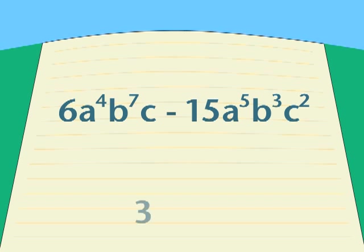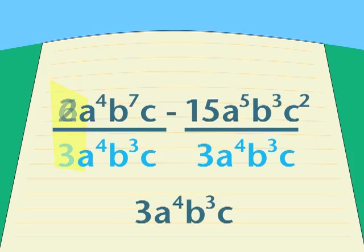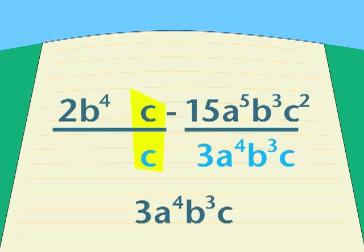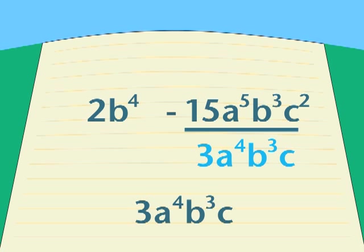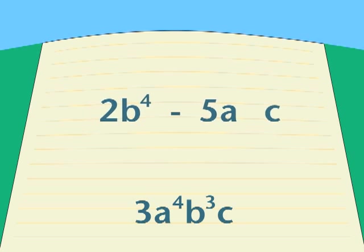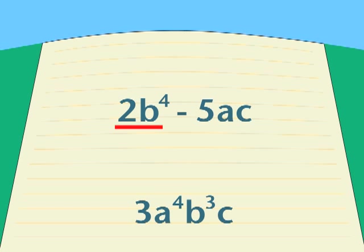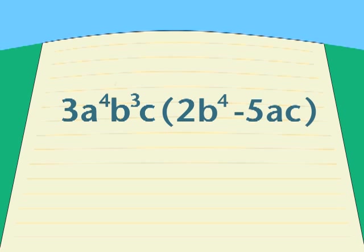Leftovers. We have removed 3, and a to the fourth power, and b cubed, and c. In the first term, 2b to the fourth power. In the second term, 5ac. Put those terms in brackets, and we have the answer.